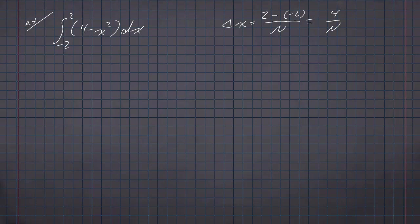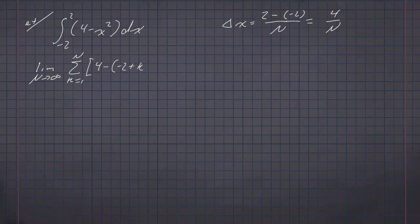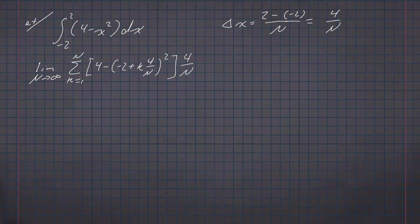And the integral, by definition, is the limit as n goes to infinity of the sum k goes from 1 to n of our function 4 minus x squared, evaluated at a plus k delta x. So we have 4 minus the quantity — a, which is negative 2, plus k times delta x, which is 4 over n — squared, times delta x, which is 4 over n. So there's the function evaluated at a plus k delta x, and then we multiply by delta x.